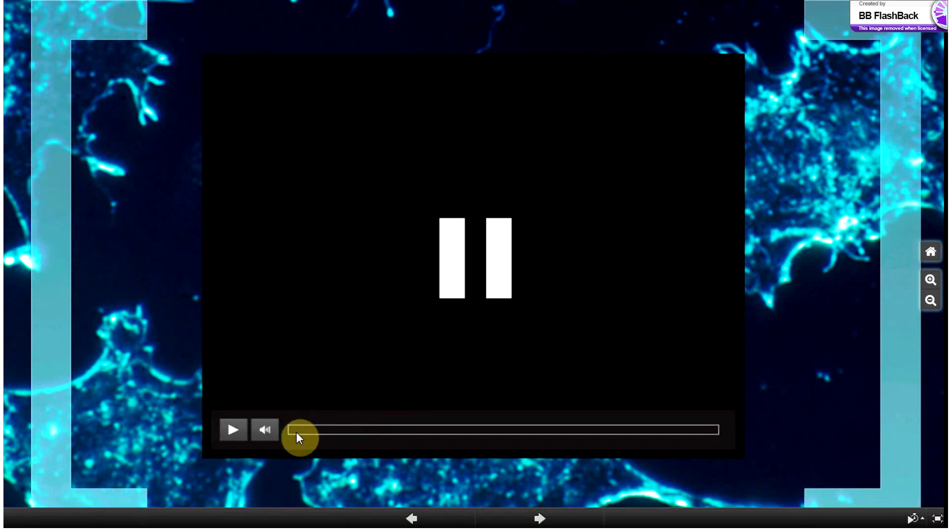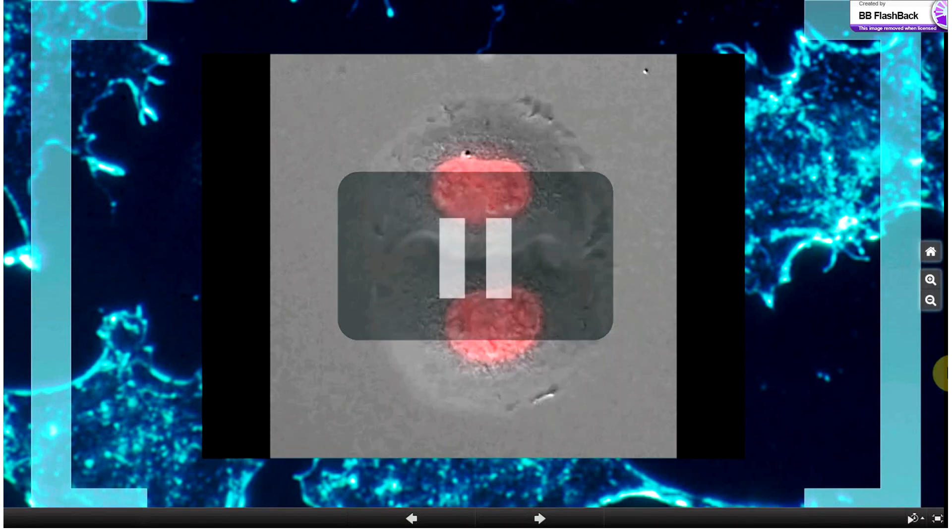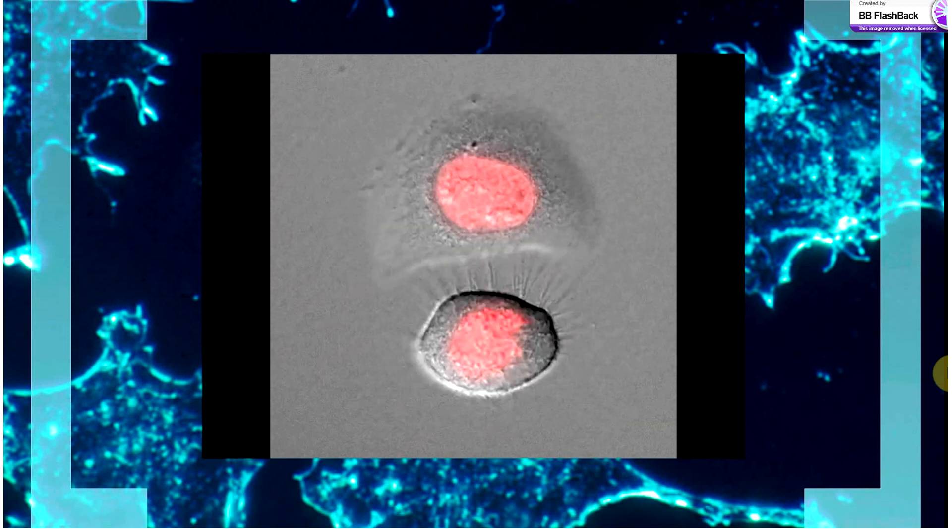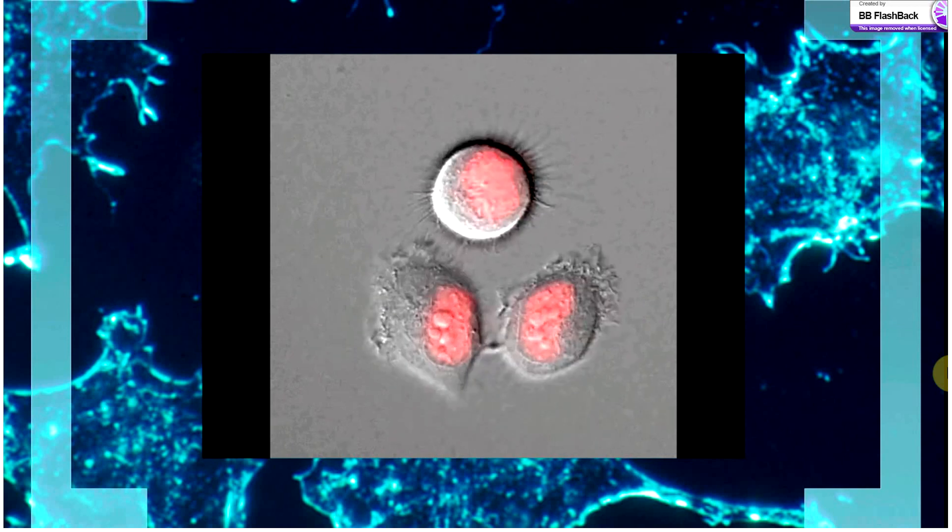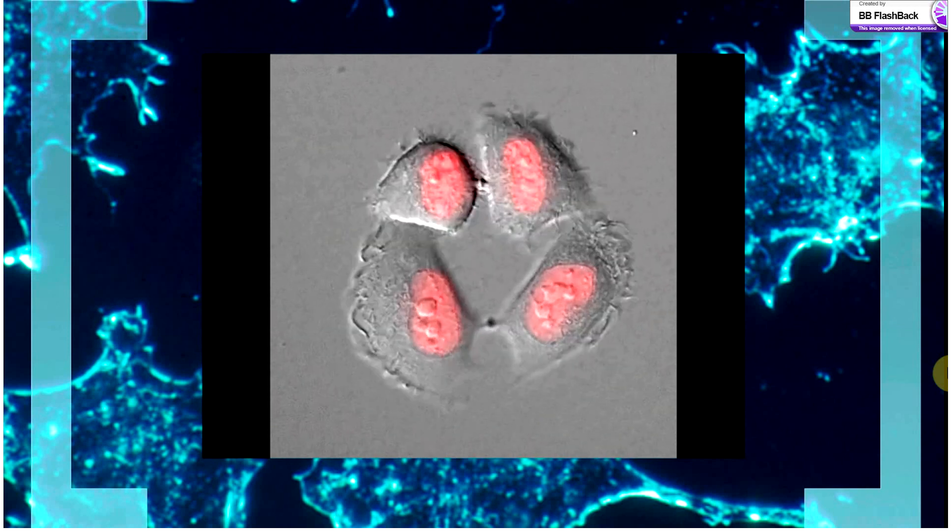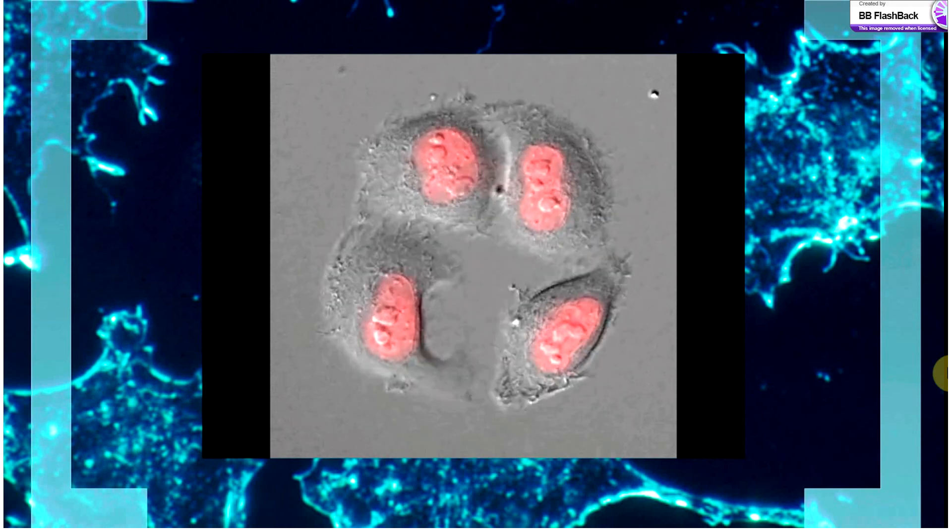As cancer cells divide over time, they acquire new mutations. This leads to genetic variation in the cancer population. These new mutations are replicated and spread. This is a form of inheritance. Selective pressures in the body, as well as from cancer therapy, cause some cancer cells to survive where others do not.